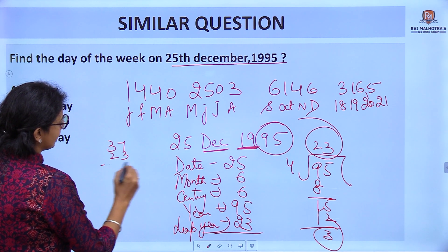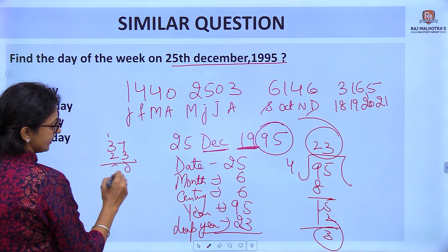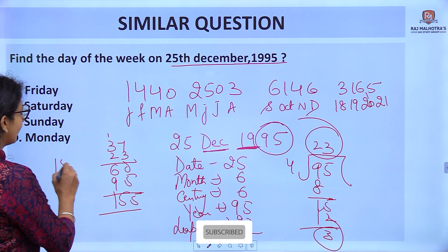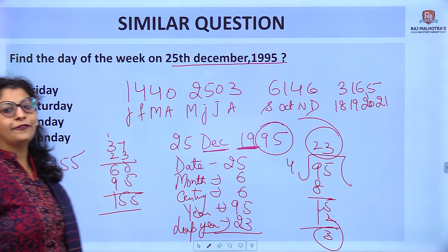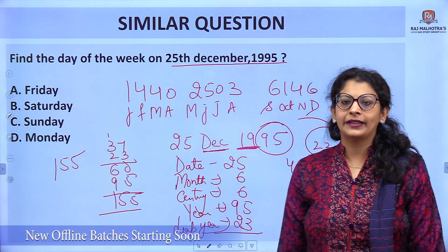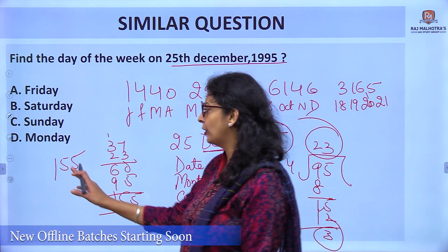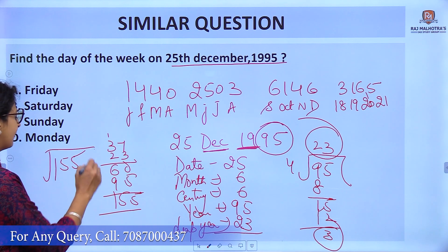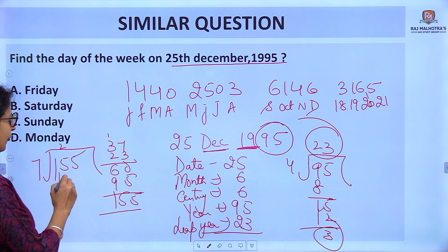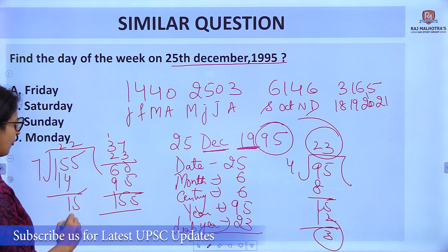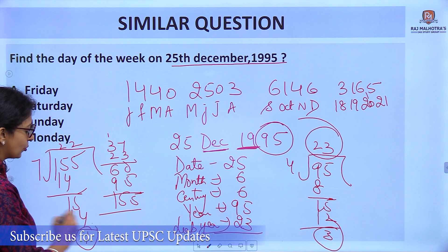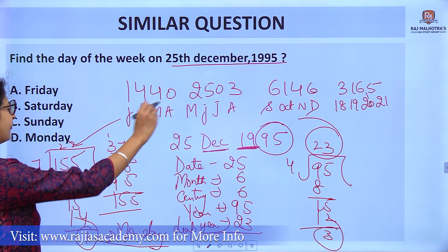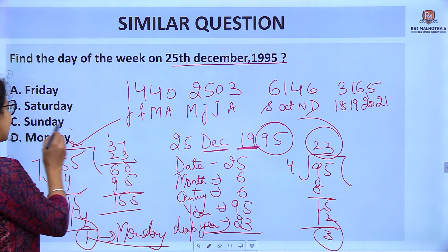Continuing the addition: 37 + 23 = 60; 60 + 95 = 155. Dividing 155 by 7: 7 twenty-twos are 154, remainder is 1. Remainder 1 means the first day of the week, which is Monday. So the answer for 25th December 1995 is Monday.